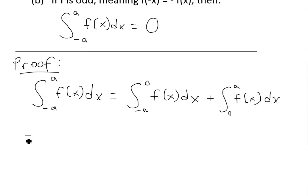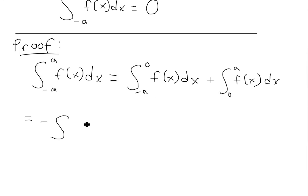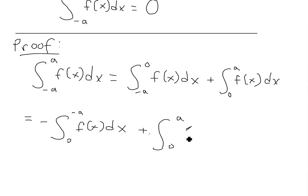You can learn more about that in my integrals and their properties videos — see the links below. So we get negative of the integral from zero to negative a of f(x) dx, because if you switch those limits you get a negative area, and then we add the integral from zero to a of f(x) dx.